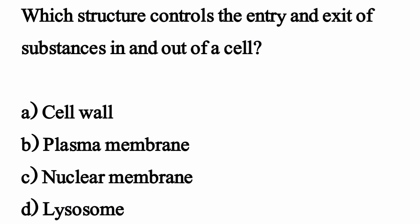Which structure controls the entry and exit of substances in and out of a cell? The correct option is Option B: Plasma Membrane.